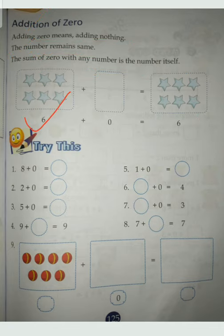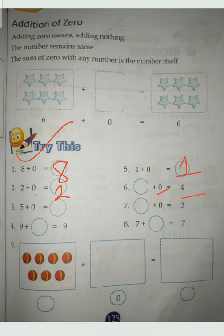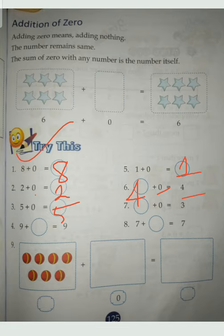Six stars plus zero stars is equal to six stars. Six plus zero is equal to six. Let's try: eight plus zero is equal to eight. One plus zero is equal to one. Two plus zero is equal to two. Five plus zero is equal to five. So students, whenever we add zero with any number, we get the same number. I hope you understood the class. Thank you.